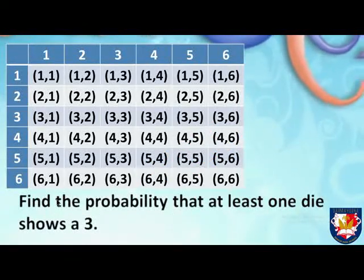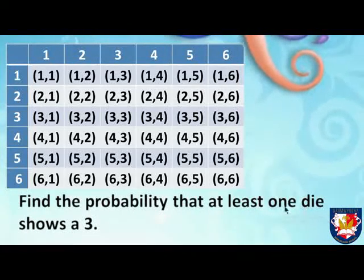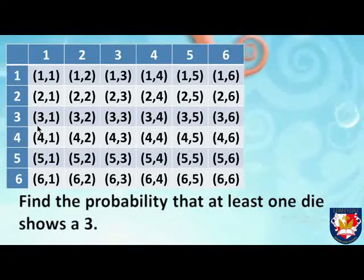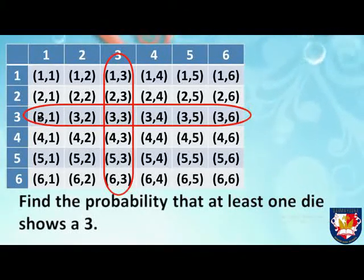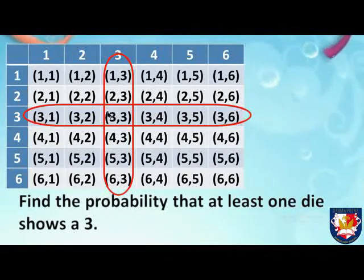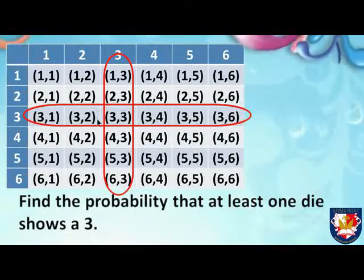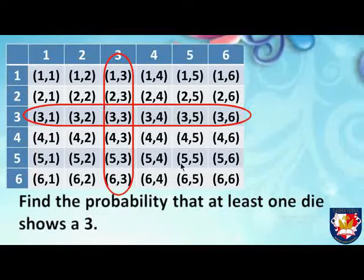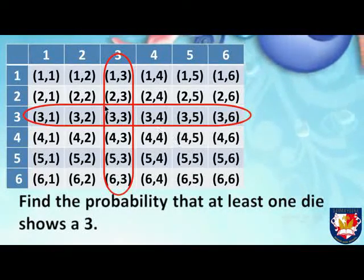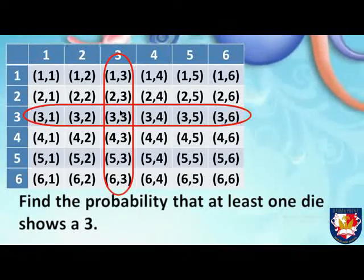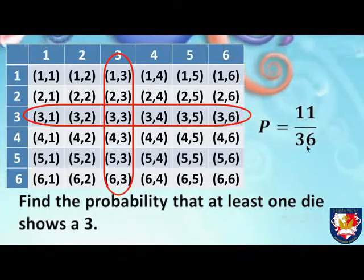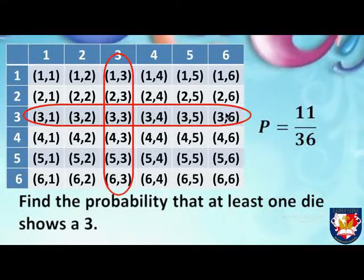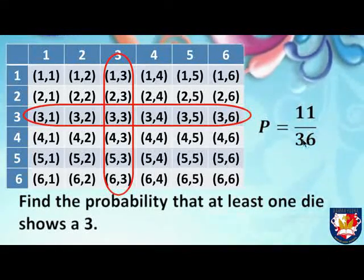Next, find the probability that at least one die shows a three. We identify all outcomes that have at least one three. Some outcomes have two threes — that's fine, because the condition is 'at least one.' There are 11 such outcomes, so the probability is 11 over 36.